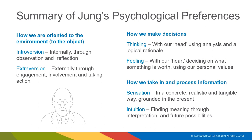Now in the final summary of Jung's psychological preferences, share how we are oriented towards our environment — introversion versus extroversion. Share how people gather information, and if you've chosen to include sensation and intuition, share these in the order in which we use them. Finally share how we make decisions based on information that we've gathered — thinking based on data, facts, and logic, or feeling based on people, feelings, and relationships.